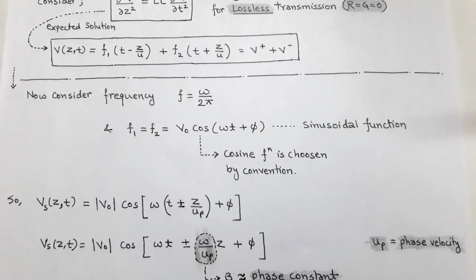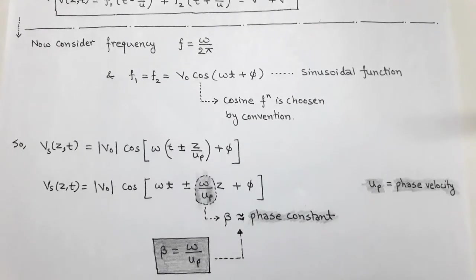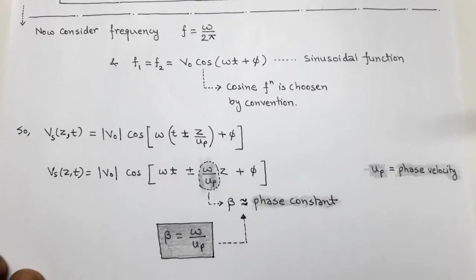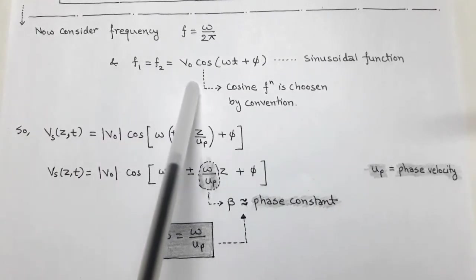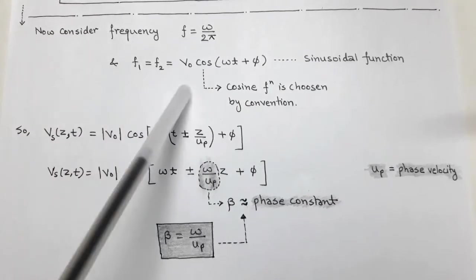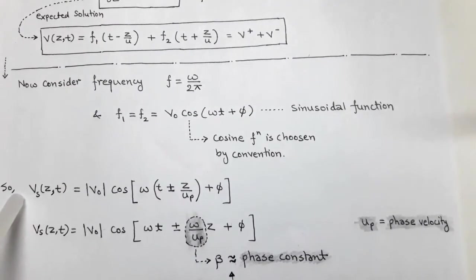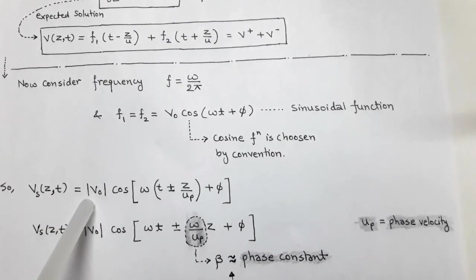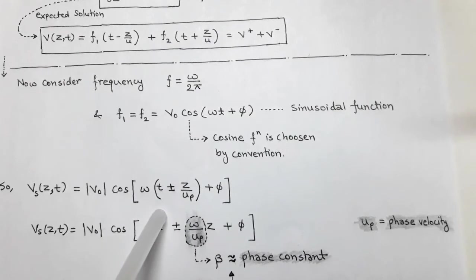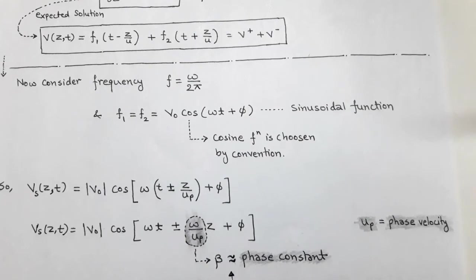The cosine function is chosen by convention because it is easier to use compared to the sine function. F1 and F2 are taken as sinusoidal functions of the form V₀ cos(ωt + φ), where φ is the phase difference. After taking F1 and F2 as sinusoidal functions, the expected solution becomes the sinusoidal solution V_S(Z, T) = |V₀| cos(ωt ± Z/U_P + φ), where U_P is the phase velocity for the sinusoidal wave.